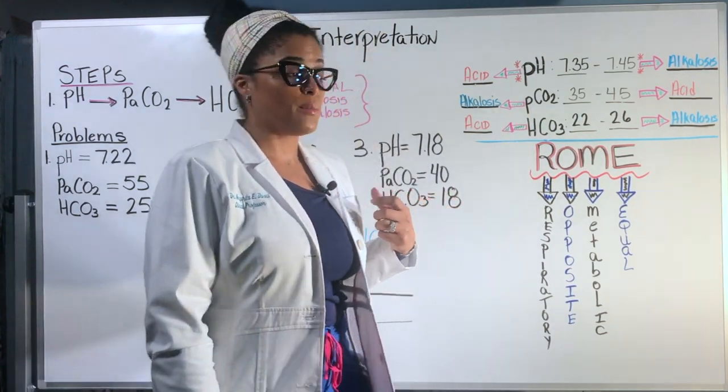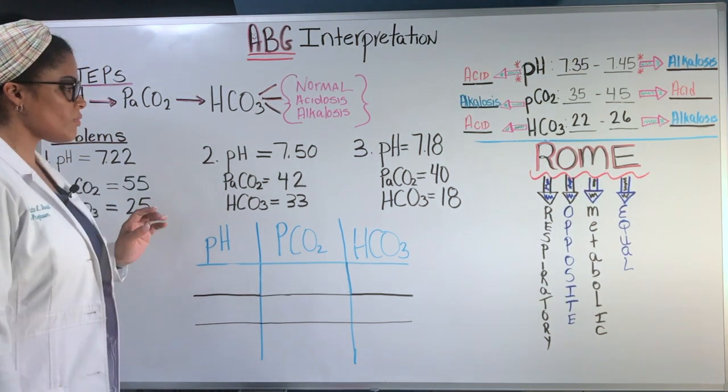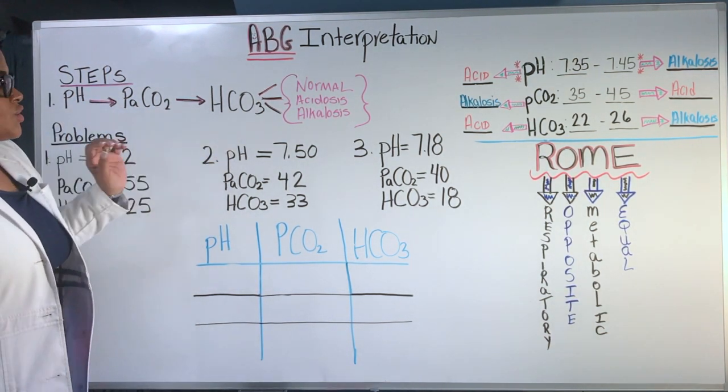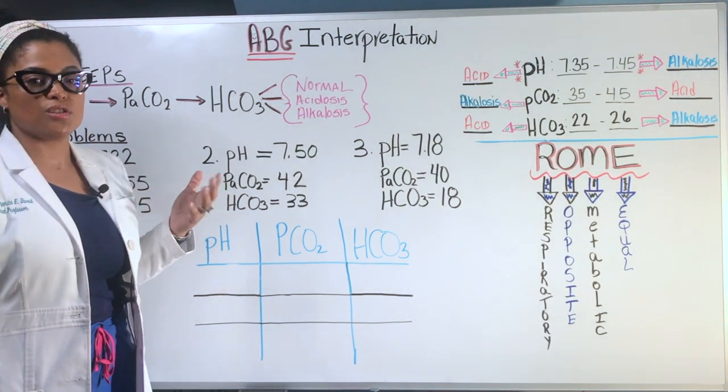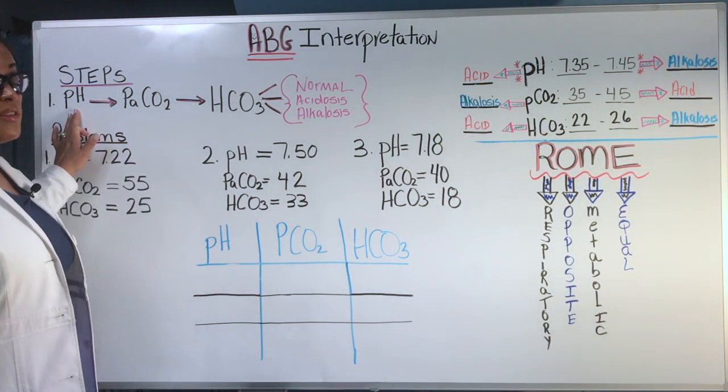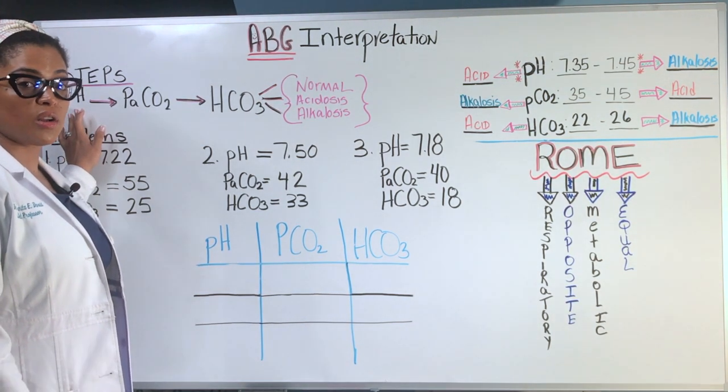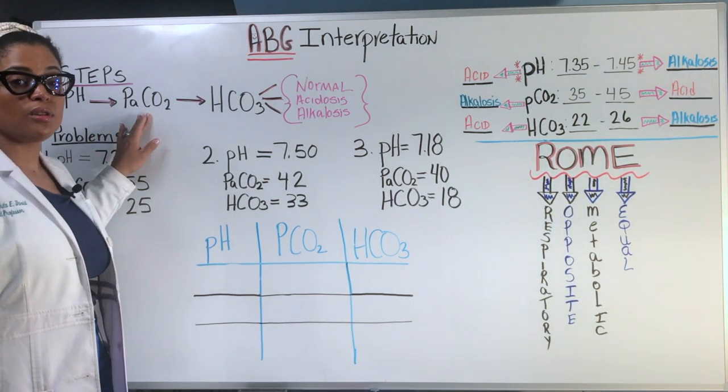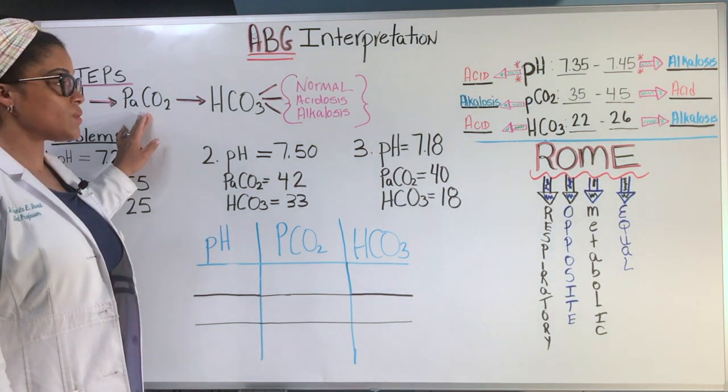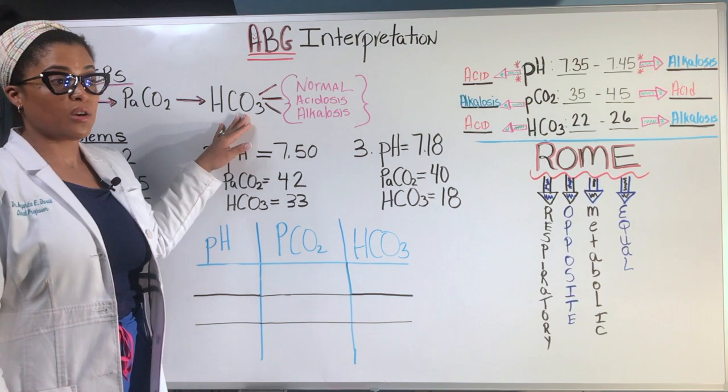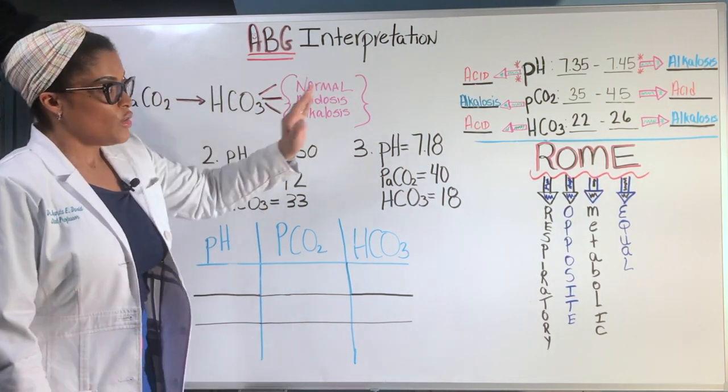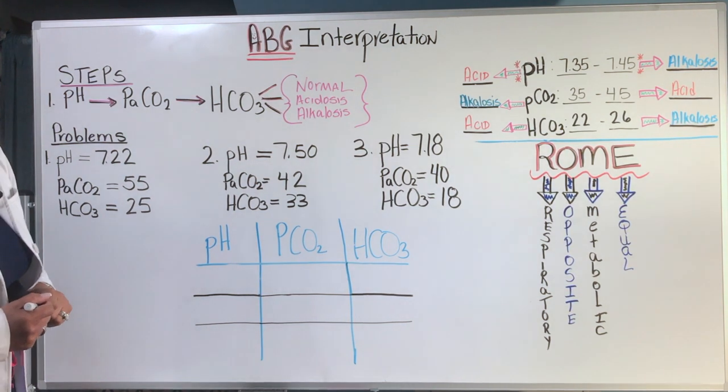And I have three examples here that we're going to talk about. And just like we did previously, it's the same steps. So when you're trying to interpret ABGs, you're first going to look at the pH value and determine if it's normal, acidotic or alkaline. Then you're going to look at the CO2 level to see if it's normal, acidosis or alkalosis. And then you're going to look at the bicarb to see if it's normal, acidosis or alkalosis. And you have the ranges on the other side of the board.